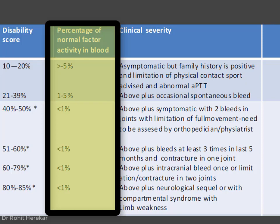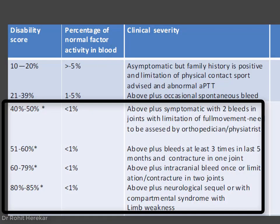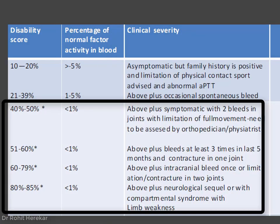Patients will usually bring the reports; if not, request them. Less than 1% factor activity in blood will generally give more than 40% disability. The third criterion is clinical severity — spontaneous bleed or restriction of joint movement. Orthopedic review is extremely important, and if factor activity is higher, it can still contribute to the orthopedic assessment and increase the overall percentage.